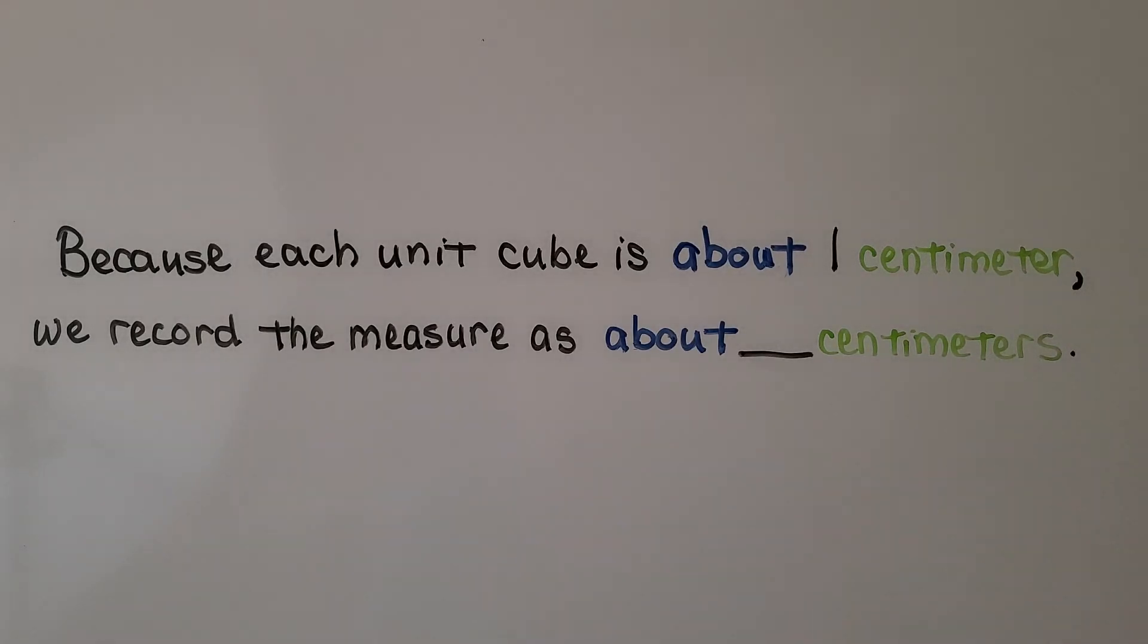Because each unit cube is about one centimeter, we record the measure as about that amount of centimeters. So we're saying about because it's not exact.